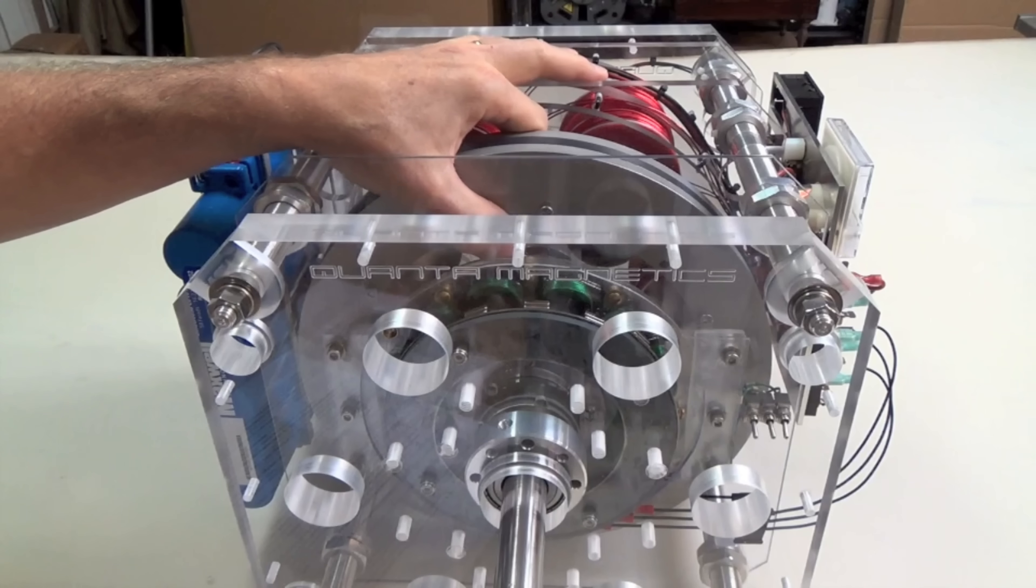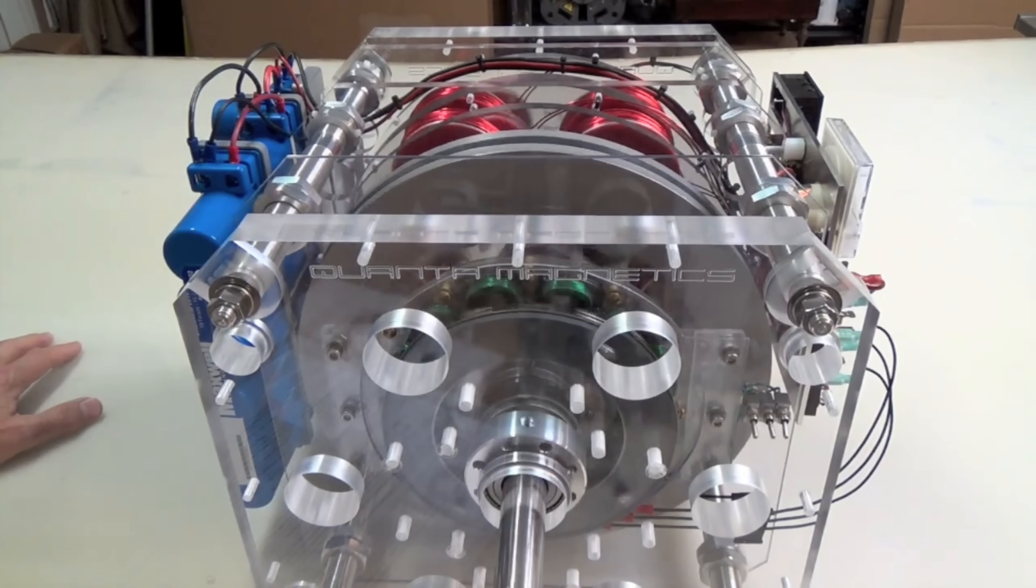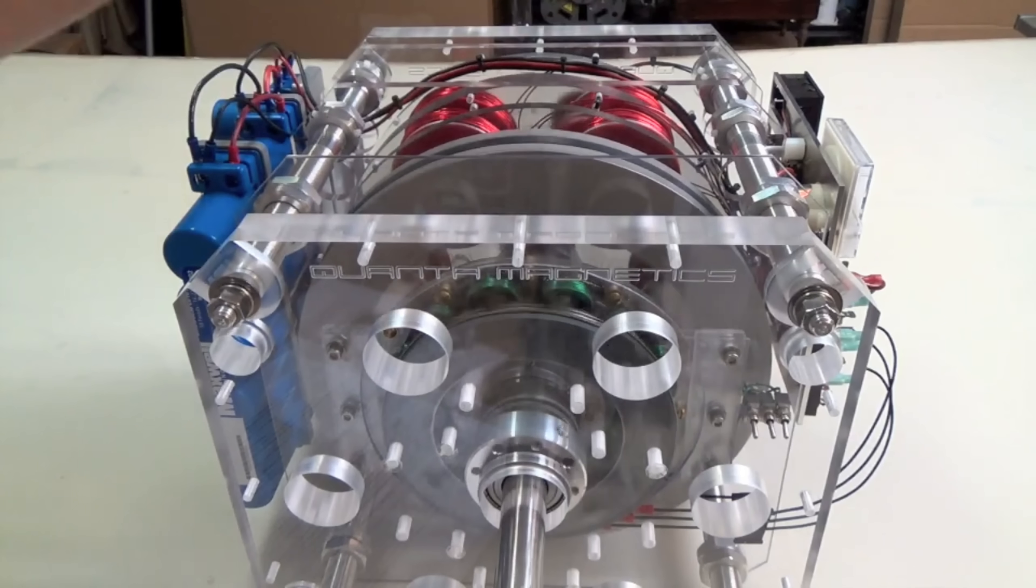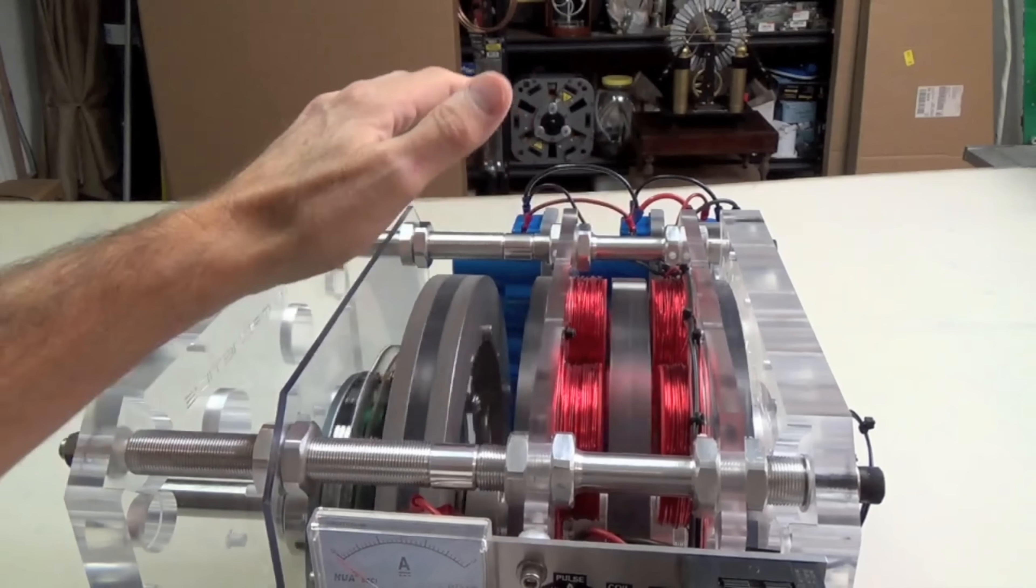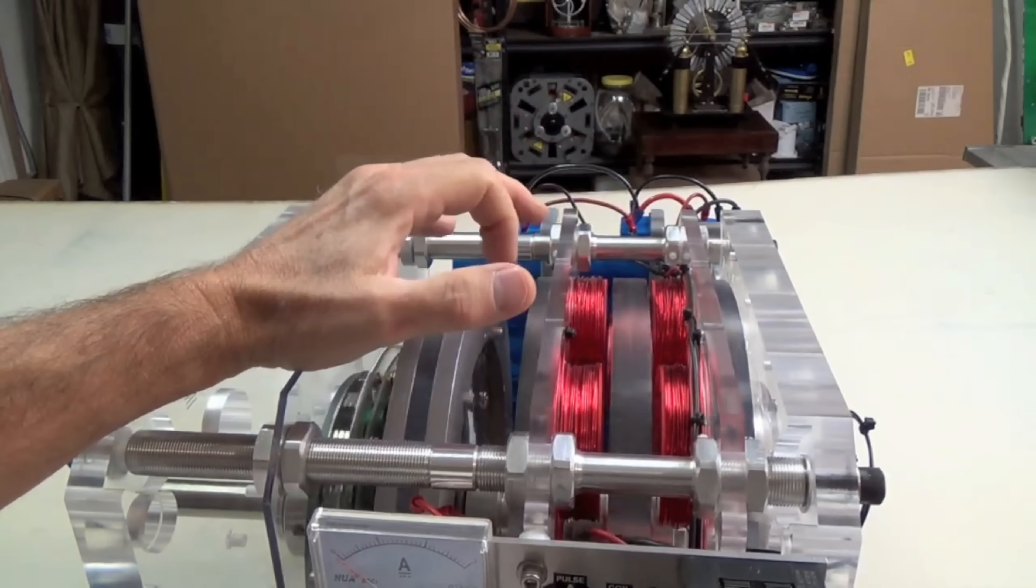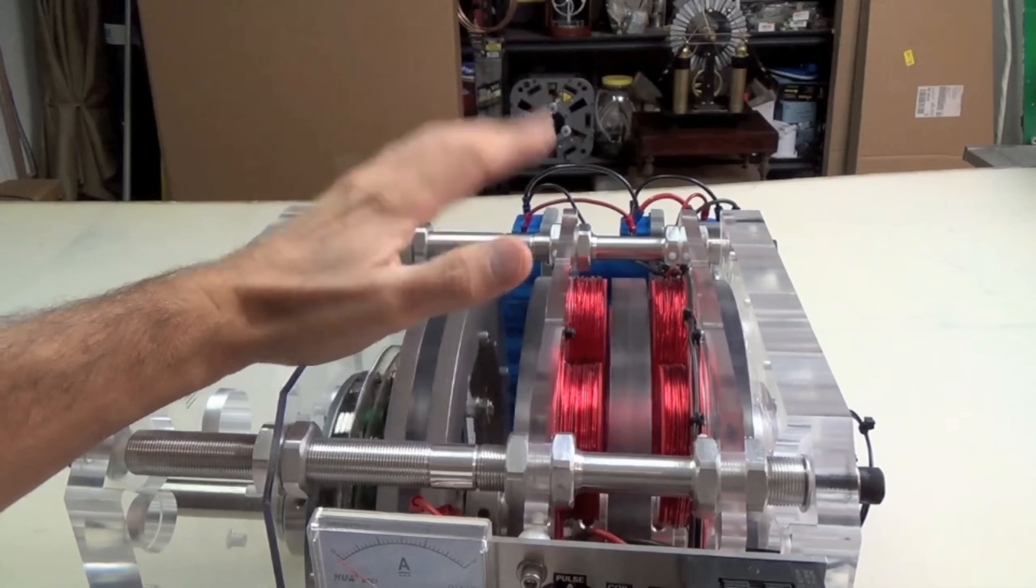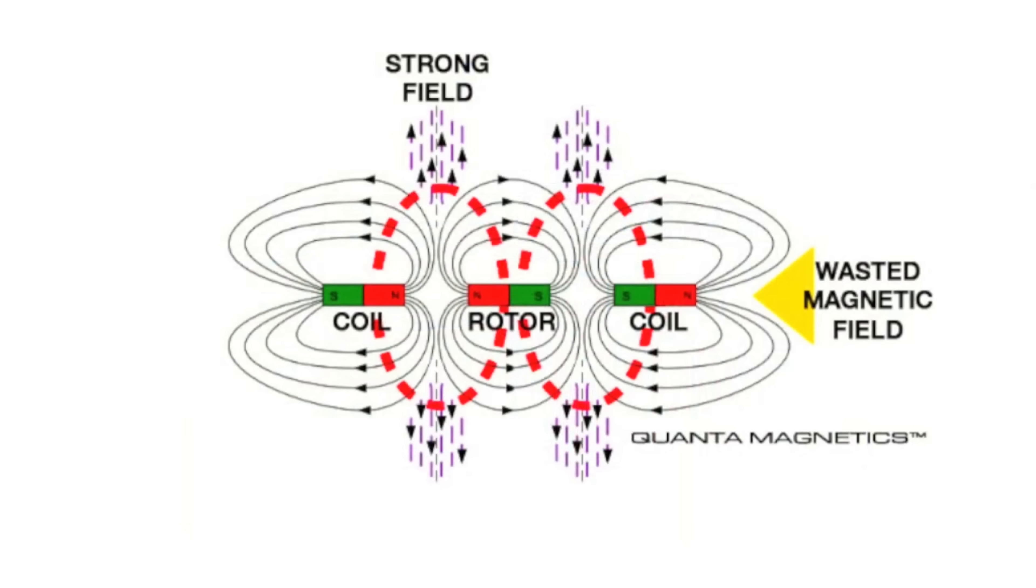This, they said, would allow their generators to run indefinitely, outputting far more electricity than the energy required to power them. The potential implications of such technology were staggering. Quantum Magnetics promised to deliver electricity at a fraction of the cost of traditional power without any harmful emissions or environmental impact. It was the kind of breakthrough that could fundamentally transform the global energy landscape, freeing humanity from its reliance on fossil fuels and ushering in a new era of clean, abundant power. Naturally, the company's bold claims generated significant buzz and hype. Quantum Magnetics generators were widely covered in the media, and the company quickly amassed a devoted following of early adopters and believers. Thousands of customers across the United States rushed to purchase the devices, eager to harness the promise of free energy for their homes and businesses.